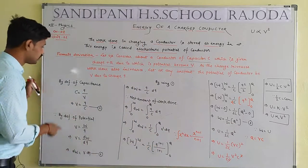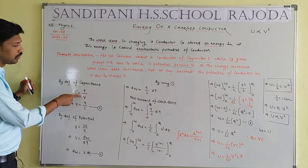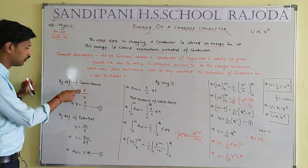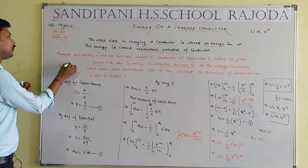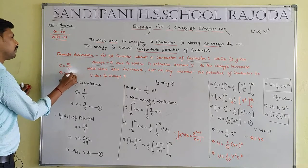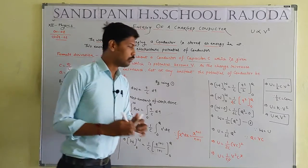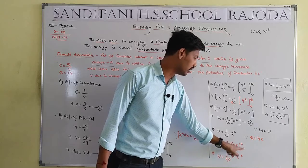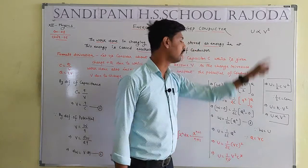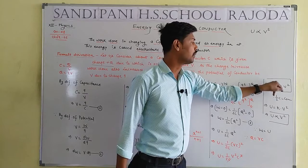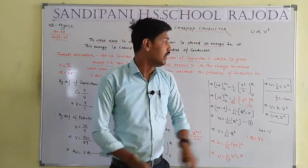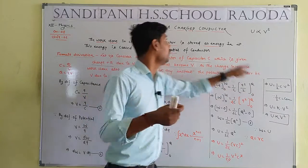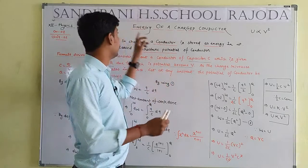We take integration on both sides. Integration of dW equals W. Using the formula integration of X to the power N dX equals X to the power N+1 divided by N+1: since power of Q is 1, we get Q squared by 2. So W equals 1 by 2C into Q squared.